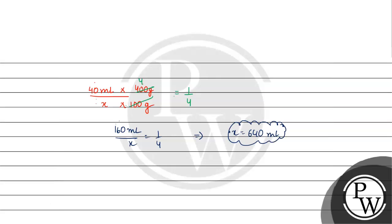Now, if we want to find the mass of ozone, we use the ideal gas equation PV = nRT. The pressure is 4 atm, and the volume is 640 ml. We convert to liters: 1 ml = 10⁻³ liters, so volume = 640 × 10⁻³ liters.